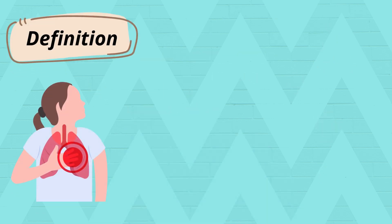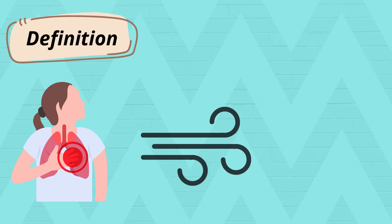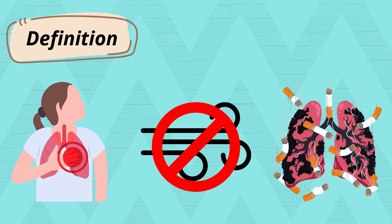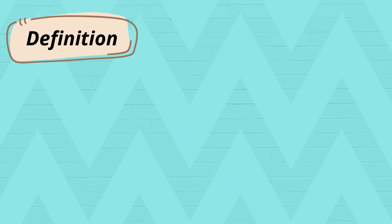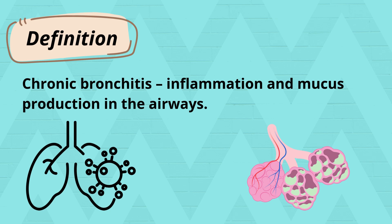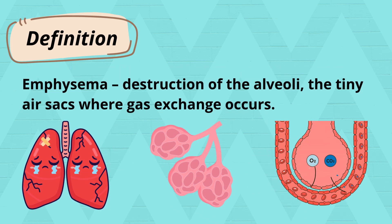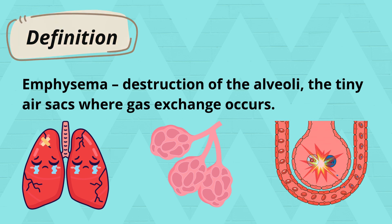COPD is defined as a chronic, irreversible airflow limitation caused by damage to the lungs, usually due to long-term exposure to harmful particles, especially tobacco. It includes two main components: Chronic Bronchitis, inflammation and mucus production in the airways, and emphysema, destruction of the alveoli, the tiny air sacs where gas exchange occurs.